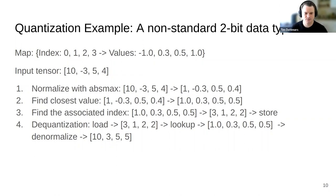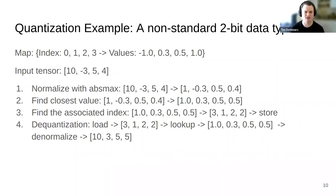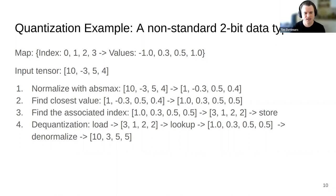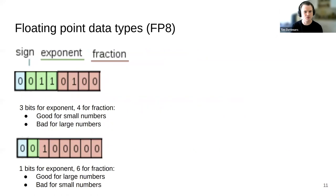To de-quantize, we load the indices 3, 1, 2, 2, do a lookup to get 1, 0.3, 0.5, 0.5, then multiply by the absolute maximum value to reverse the normalization and recover the de-quantized values. In this case we have a large error — minus 3 turns into 3 — which basically means our quantization data type was not good for this input. That's a big consideration: what data types do you use and how do you construct them?